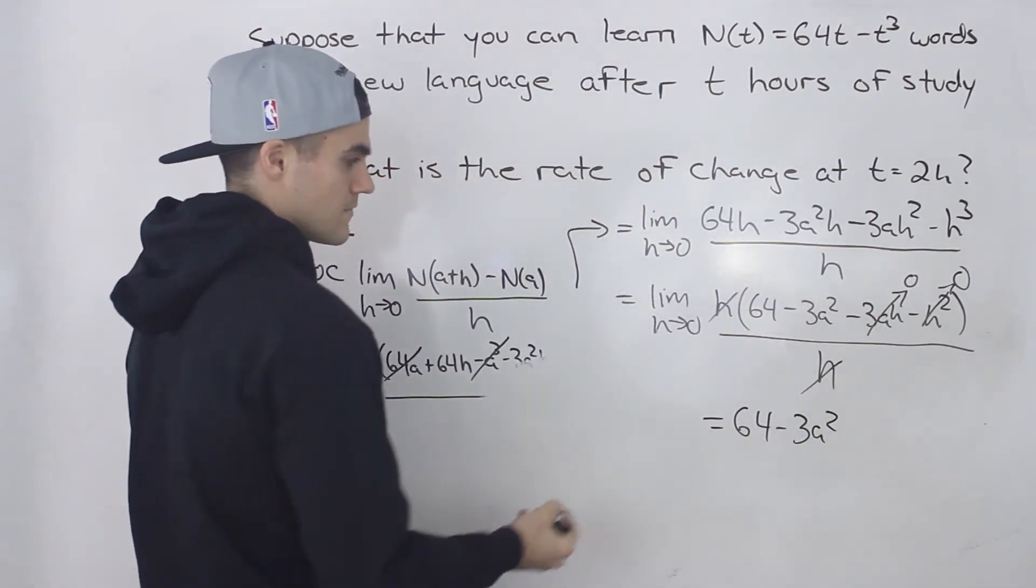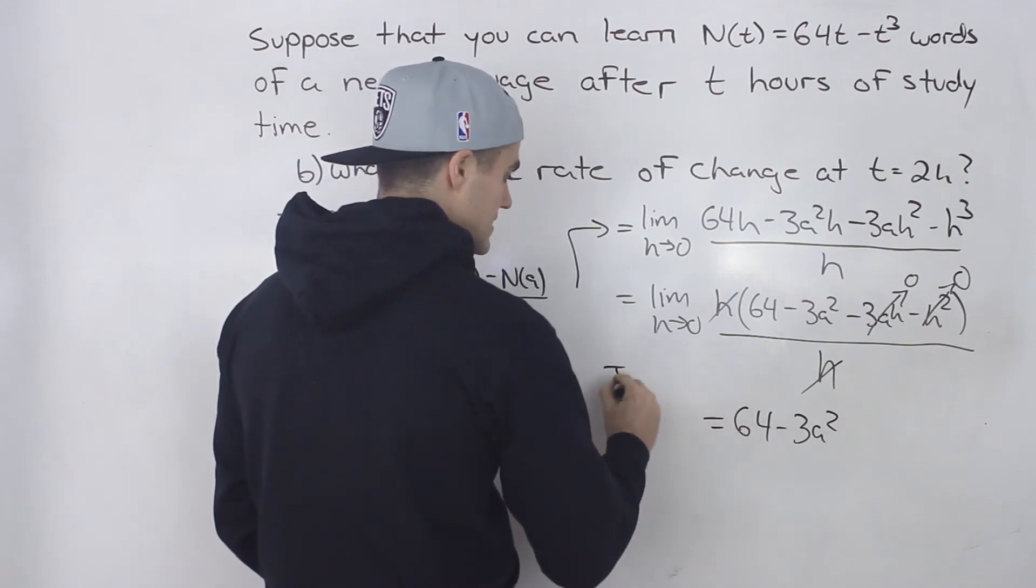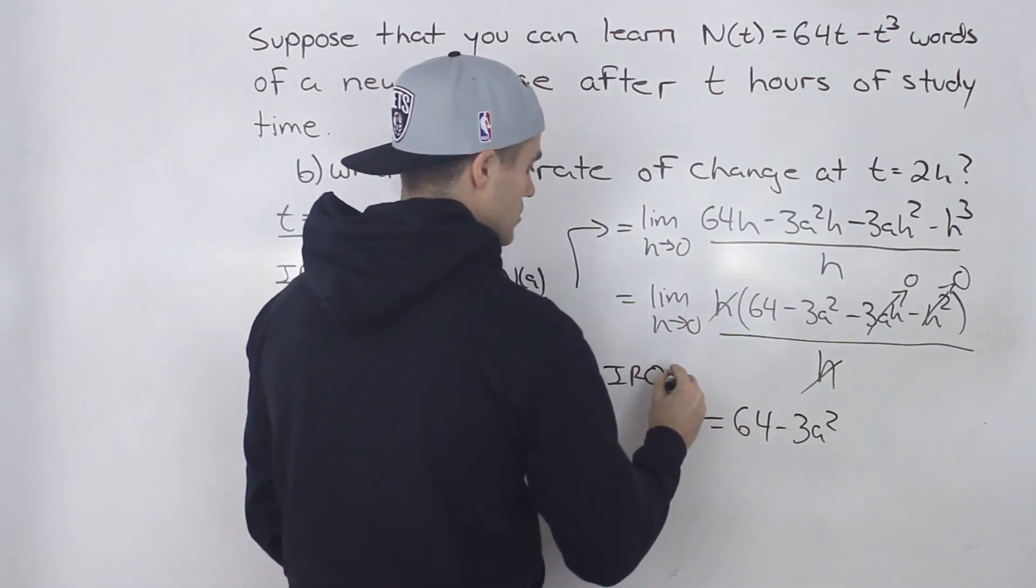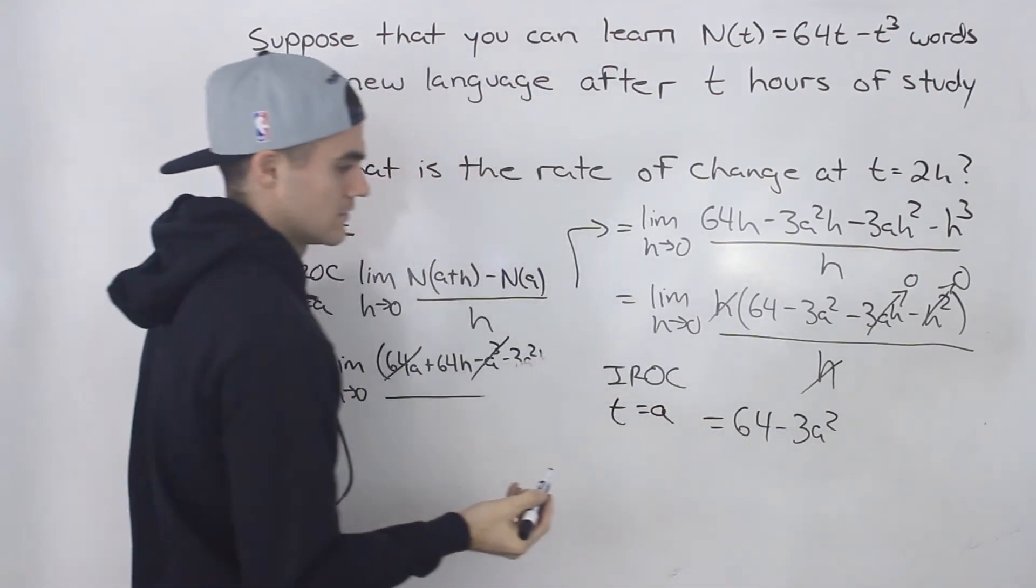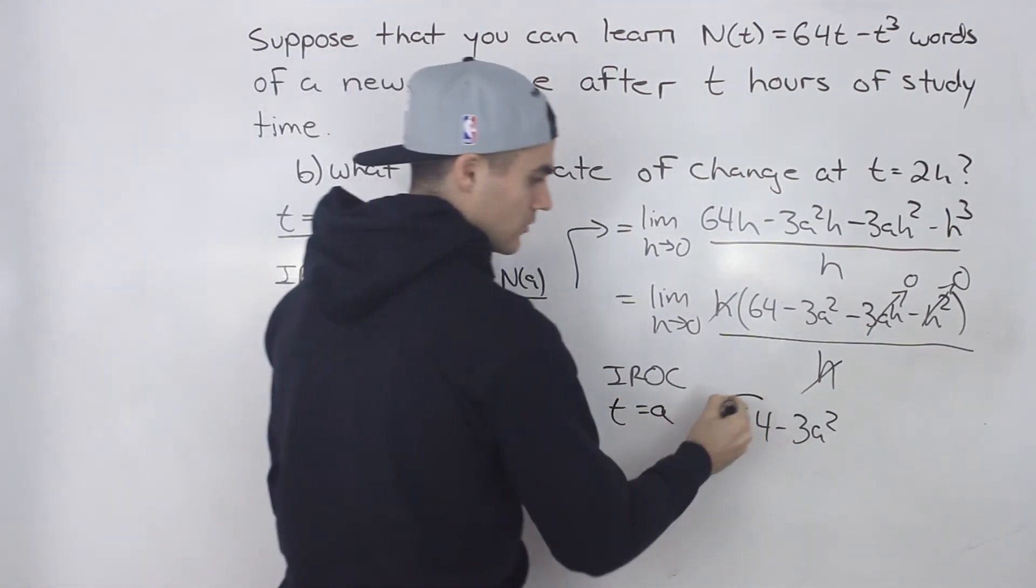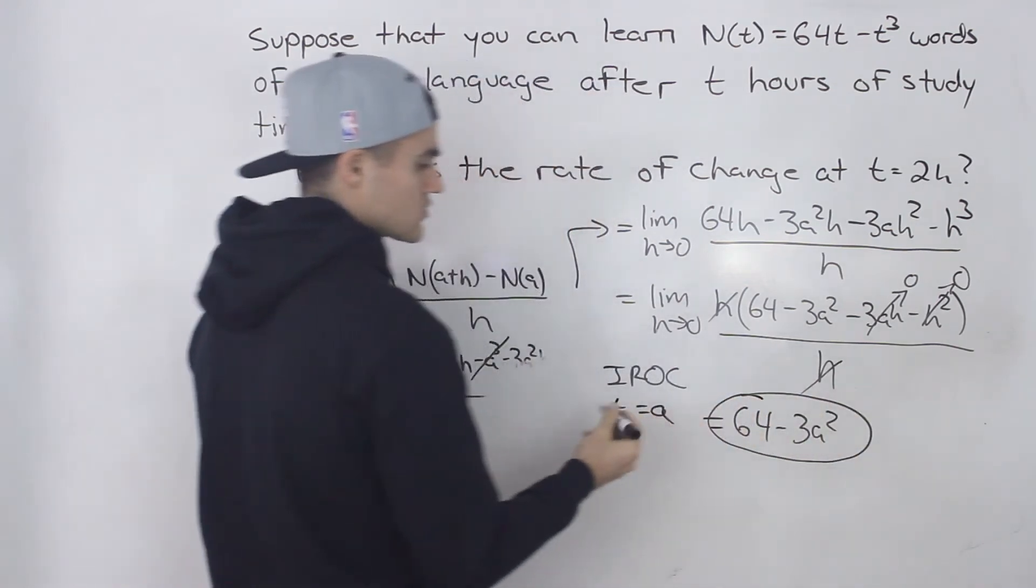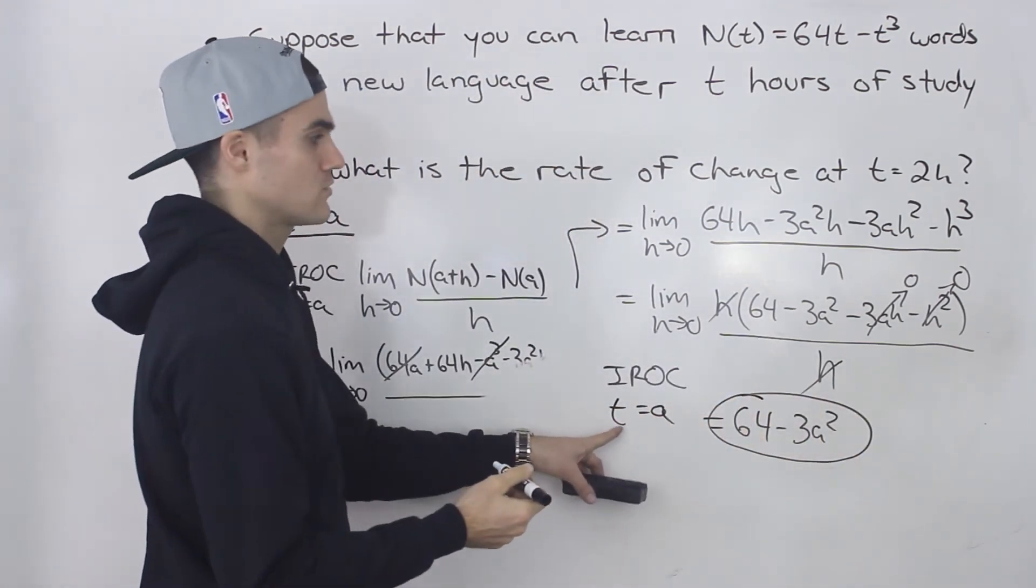So that there, this expression represents the instantaneous rate of change of this function at a t value of A. So this is the general expression for the instantaneous rate of change at a t value of A.